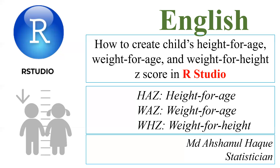Among these indicators, we can define chronic malnutrition — that means stunting — acute malnutrition, that means wasting, and undernutrition, that means underweight. So let's go to RStudio.